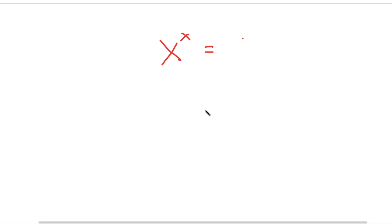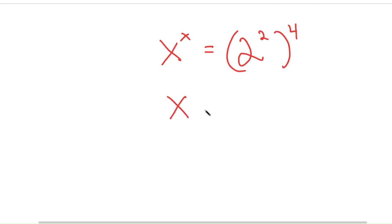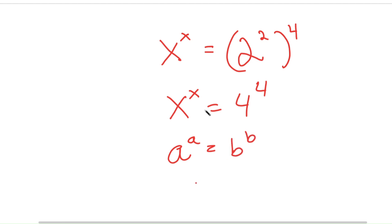So I have x to the power of x is equal to 2 squared to the power of 4. And now 2 squared is equal to 4, so I have x to the power of x is equal to 4 to the power of 4. If I have something in the form a to the power of a is equal to b to the power of b, this means that a is equal to b.